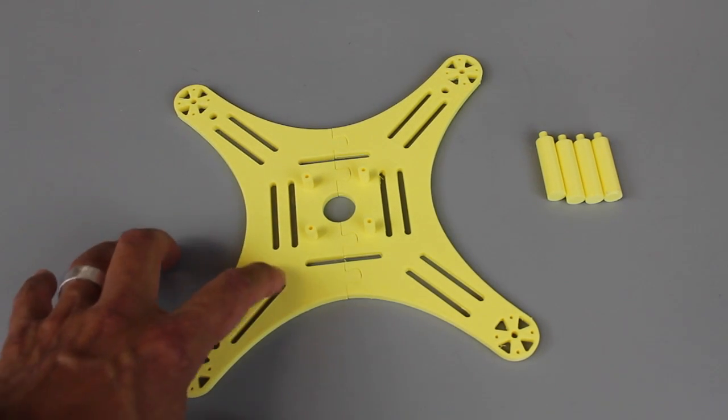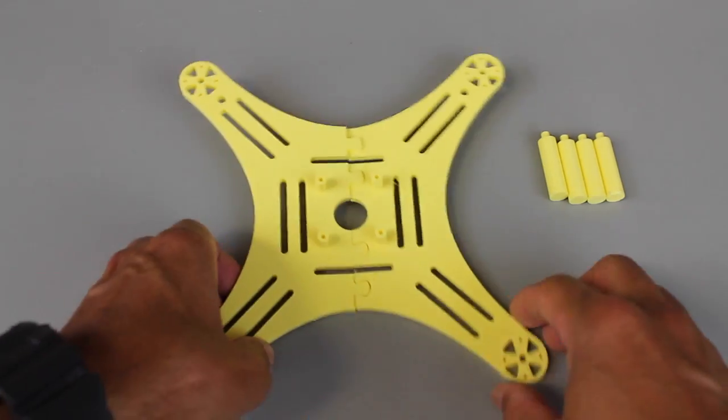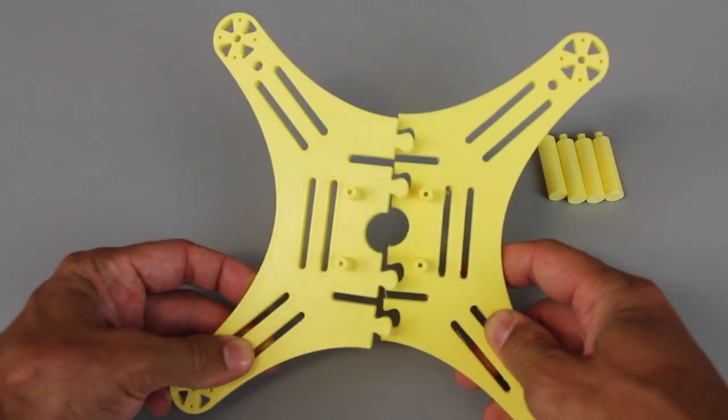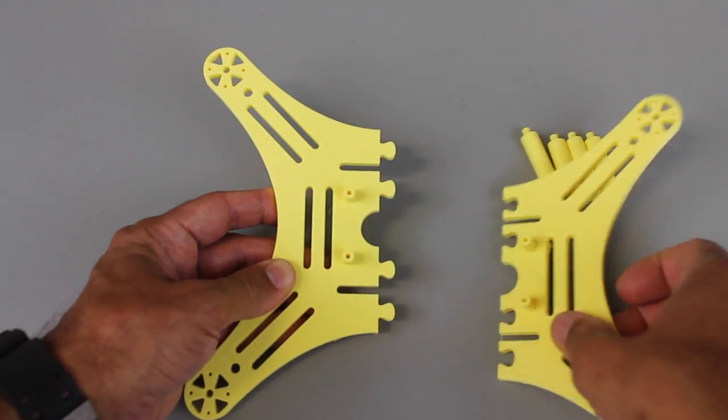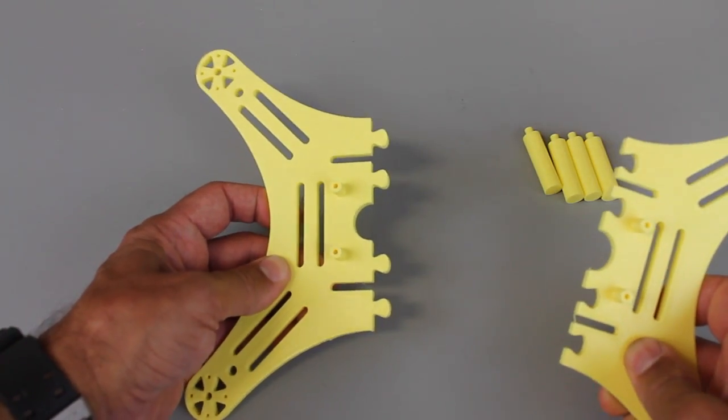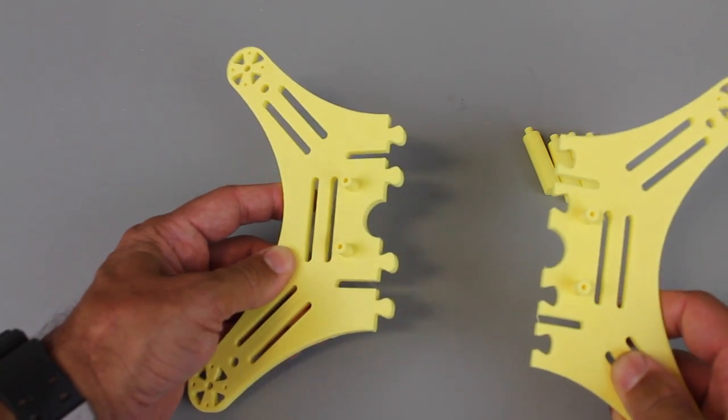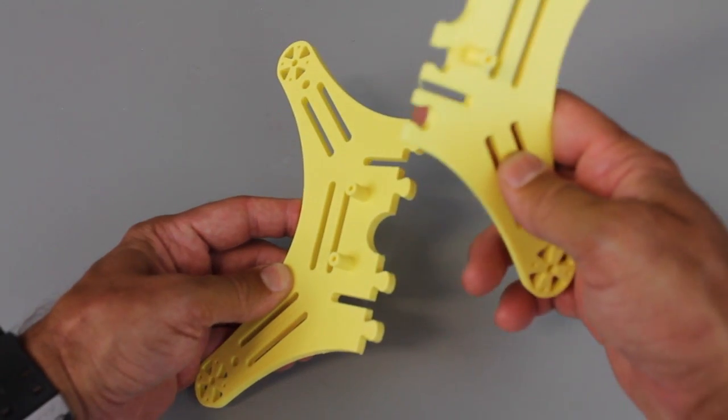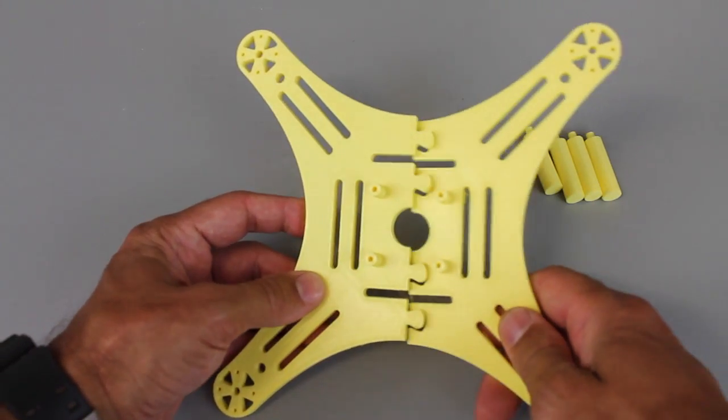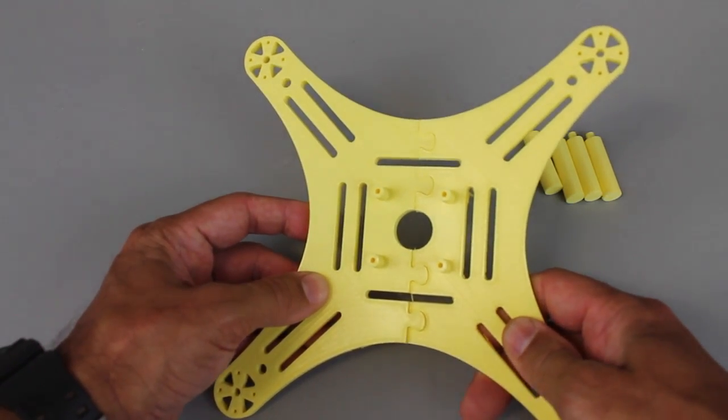I went ahead and made these cutouts a little bit bigger, and now you'll notice that there are four tabs instead of two. This was actually a suggestion from Zookie. You may remember Zookie from previous videos of some of his 3D printed quad parts and designs. He suggested that I add a couple more tabs so you can have more surface area to bond both sides of the plate together.